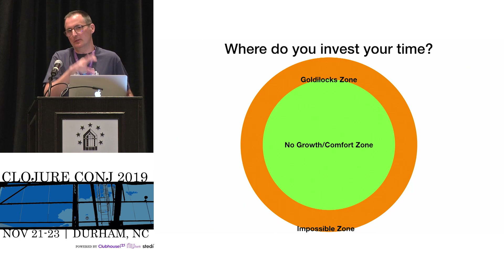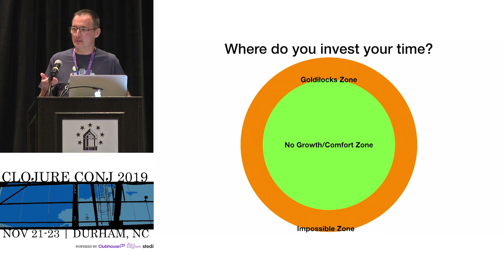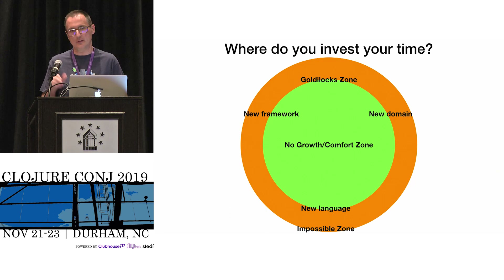The boundary between these two is very interesting — it's quite large and I call it the Goldilocks zone. Things are not too hard, not too easy — they're just right. But it's quite a large perimeter, so you have to decide with your limited time where to invest. You could spend time learning a new framework, a new domain, a new language — but remember, your time is limited and you can't do everything.